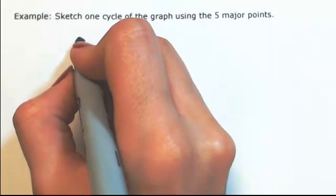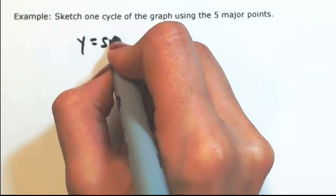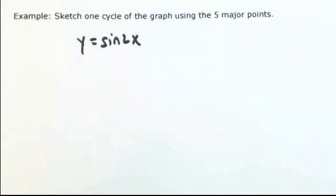Let's sketch one cycle of the graph y equals sine 2x using the five major points, which are top, bottom, left, right side of that unit circle.